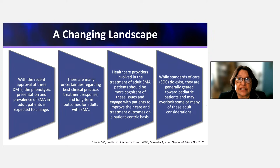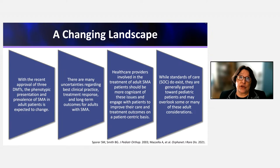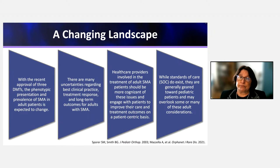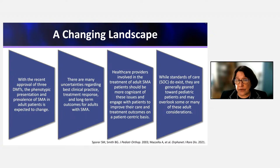Now let's talk about the changing landscape for adult patients. There are now three disease-modifying therapies. Patients who received onasemnogene as children will eventually reach adulthood, and patients studied as children will transition to adult care. There remain many uncertainties: how will treated patients present as adults? What are the best clinical practices? We don't even know what the best outcome measures are for adults with SMA.